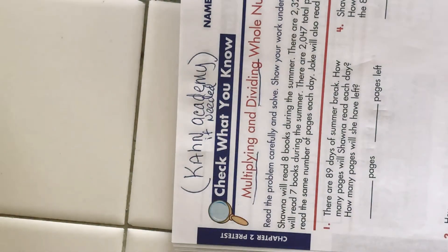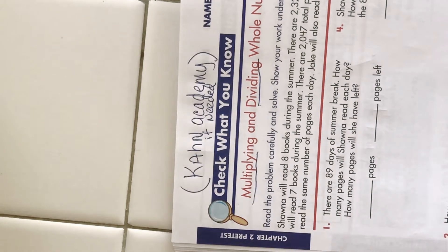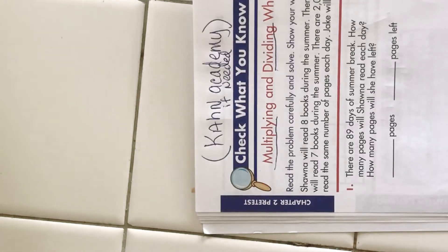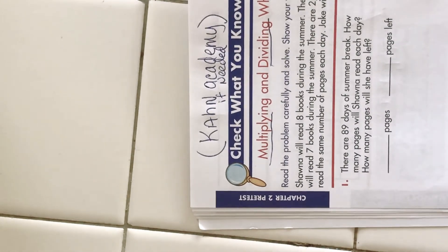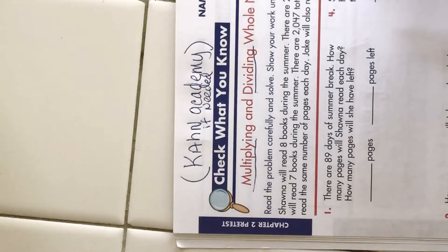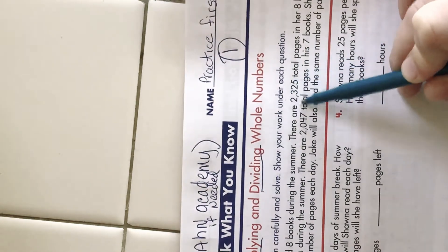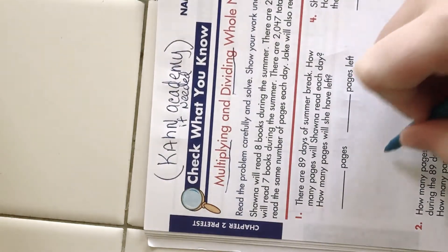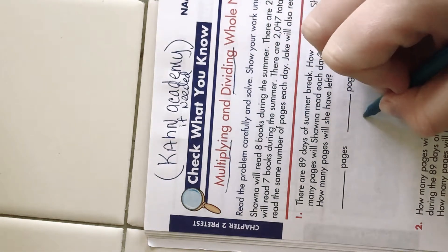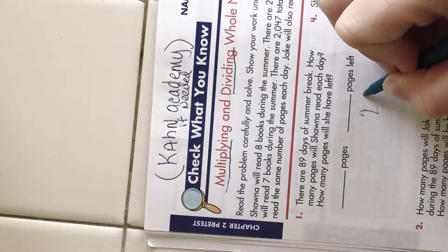So there are 89 days in summer break and she reads the same amount of pages each day. And there are 2,325 total pages — see right here. So we're probably going to want to divide, though I'm actually not too sure.